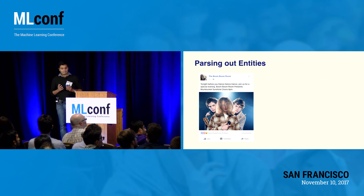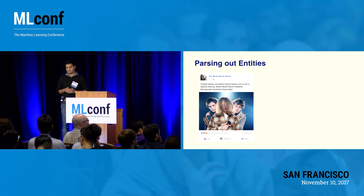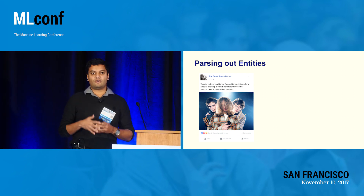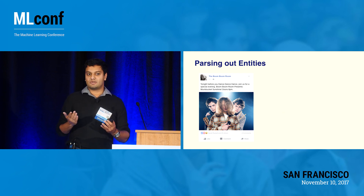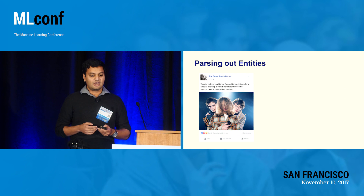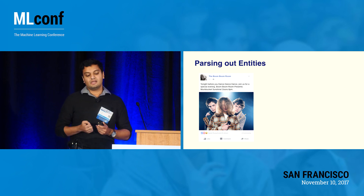Parsing named entities from text is a huge problem for us. If I post about U2 a bunch of times and all I have is a topic model, I know that I care about music. But maybe all I really care about is U2 and not all of music, so I really want to be able to extract that entity as well.